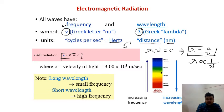When you increase the wavelength of the light it will decrease its frequency, which also means it decreases its energy.